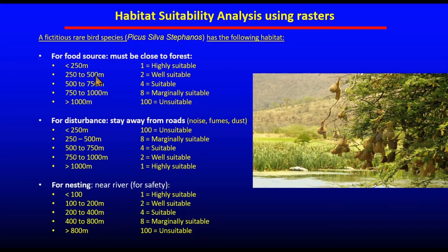Our conditions for a hypothetical bird called Picos Silva Stefanos are listed here. On the left side we have a list of distances where we change from one suitability class to another. Here, the lower the suitability value, the better. For food, suitability gets worse with distance to the forest.